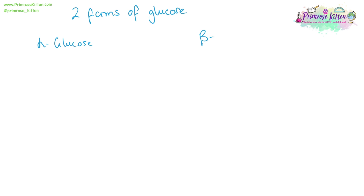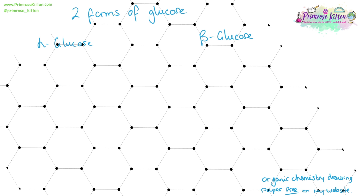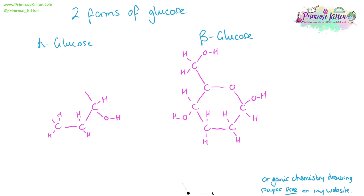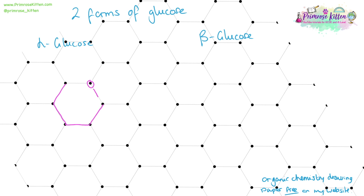There are two forms of glucose you need to know about: alpha glucose and beta glucose. The full structures are quite complicated, so don't worry too much about that. You need to learn a slightly simplified structure of alpha and beta glucose where we don't draw everything out fully, but you do need to be able to draw these.